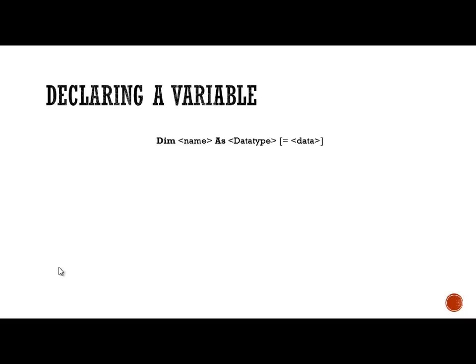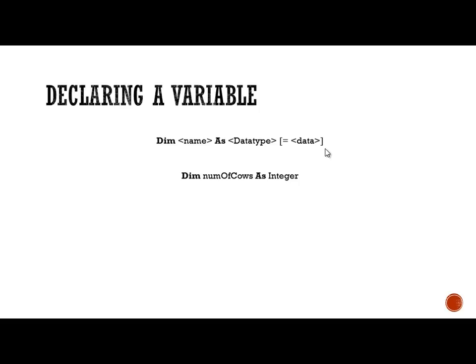In Visual Basic, you declare a variable using this terminology: you go dim, then you put the name of the variable, then the keyword as, then the data type you want. Square brackets represent something optional — you don't have to have it, but you can put equals and the data straight afterwards. For example, if I want a variable called number of cows, it's going to be a number, so I'll have it as an integer. The line of code would be: dim numOfCows as integer. Notice numOfCows has no spaces — we're not allowed spaces in a variable name. I use camel capitalising: capital O and capital C for each new word.